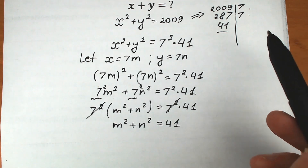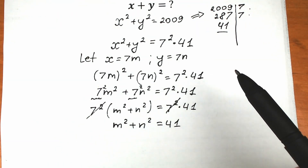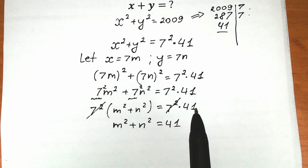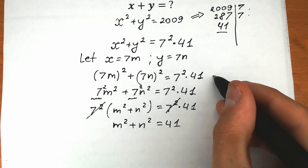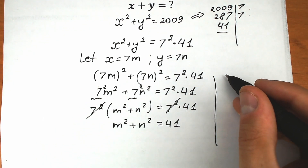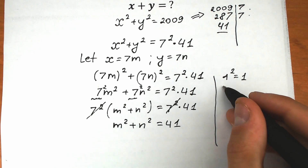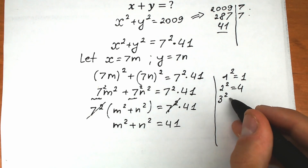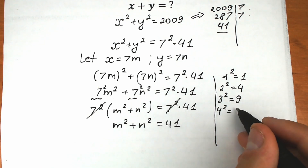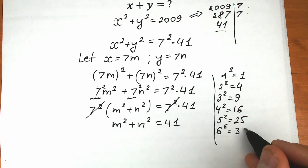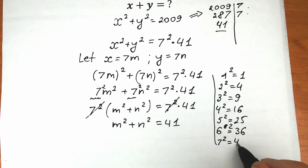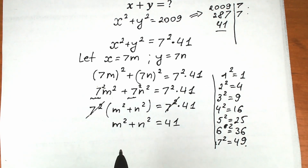Now let's list perfect squares: 1²=1, 2²=4, 3²=9, 4²=16, 5²=25, 6²=36, 7²=49. We need two of these squares that add up to 41. Looking at the list, we can see a good combination.